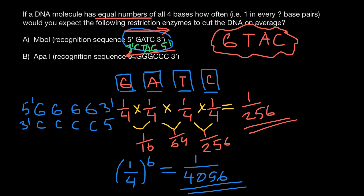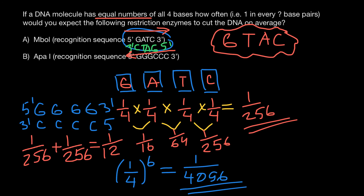Our calculations would be as follows. On one strand of the DNA, the probability for this enzyme to find the sequence would be one out of 256. But because the sequence is not palindromic, the probability that the same enzyme would find the same sequence on the other strand of the DNA would also be one out of 256. So in this case we add: one over 256 plus one over 256, and the answer would be one over 128. This is the answer when the sequence is not palindromic.